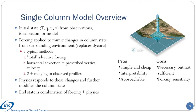Although there are many ways to apply forcing in a single-column model, it is often done in one of three ways. First, one could specify one value that combines all advective forcing — this can be called total advective forcing, or sometimes relaxed forcing. Second, one could split the advective terms into a horizontal term that is prescribed and a vertical term whose vertical velocity is prescribed.